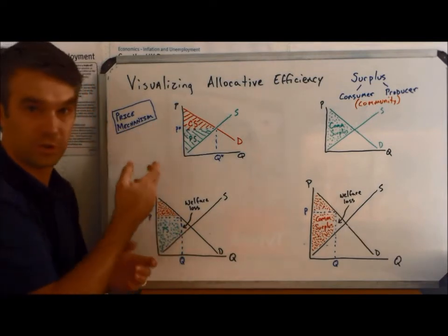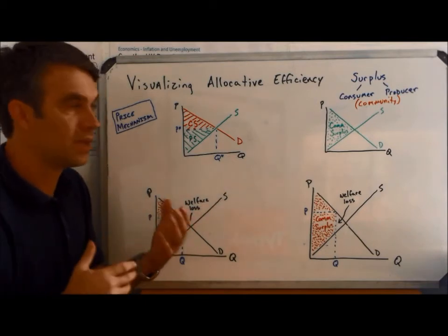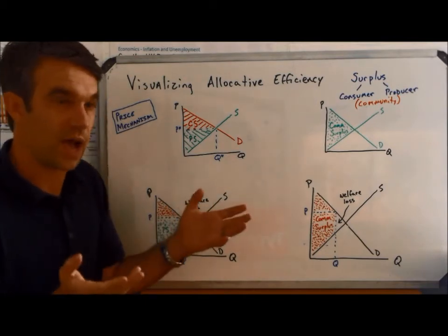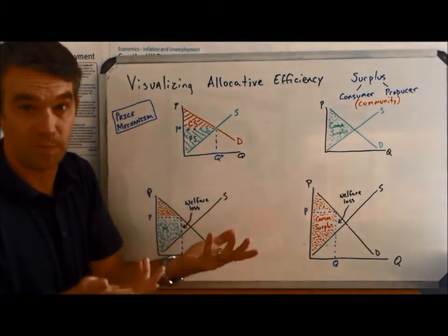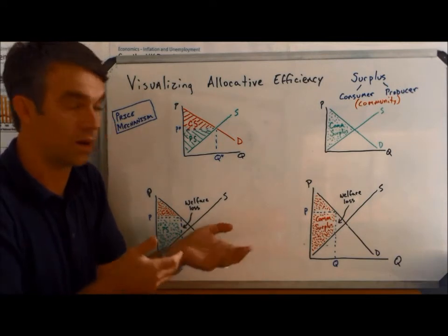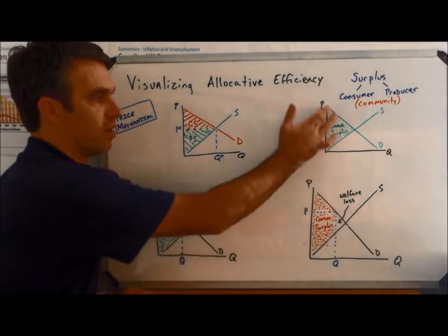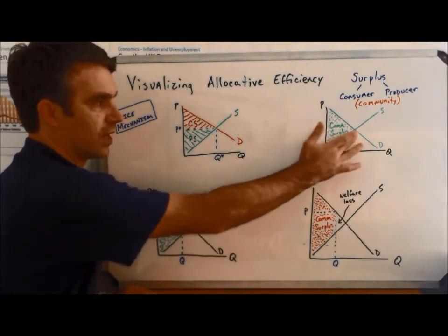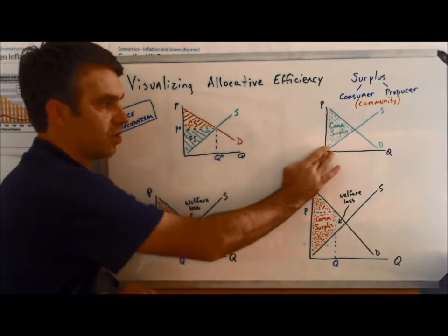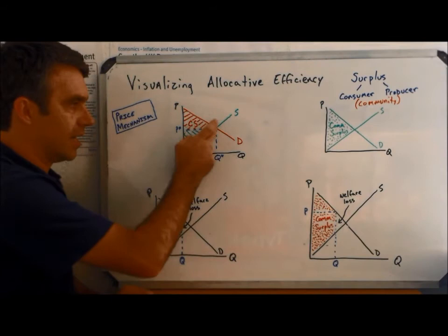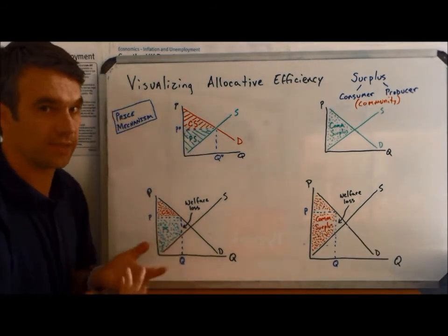Sometimes it's useful to talk about consumer versus producer surplus when we're analyzing the effects on two different groups of people. Sometimes we don't want to set up that dichotomy, so we just add them together and call it community surplus. And we just say, well, somebody, it doesn't matter if it was a producer or a consumer, somebody would have benefited from that level of production. But you'll notice the area of this triangle, assuming our supply and demand curves are the same at these two diagrams, the area of this triangle would be the exact same as the area of those two triangles. It's just two different ways of looking at the same concept.